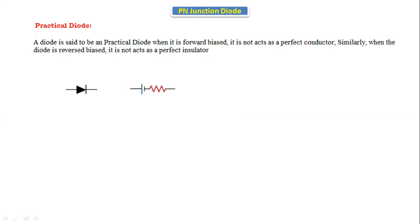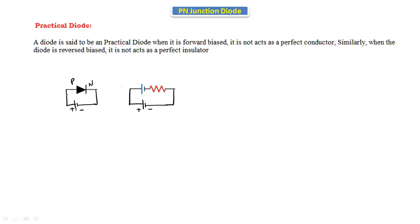When the positive terminal of the battery is connected to the p-type and the negative terminal is connected to the n-type, the diode is in forward bias. In the forward bias condition, the total diode can be replaced with one cut-in voltage that is connected in series with the forward resistance in the practical diode.